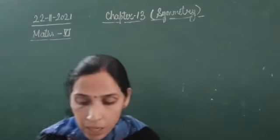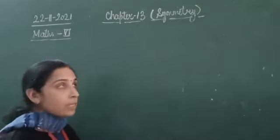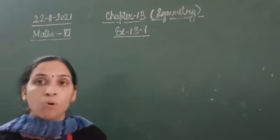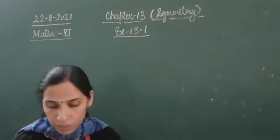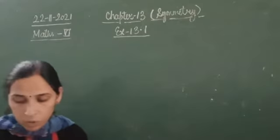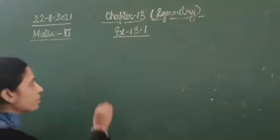Let's start with exercise 13.1. Question number 1: list any four symmetrical objects from your home or school — you can name many more objects. Question number 2: for the given figure, which one is the mirror line? You have been given a figure for question number 2.